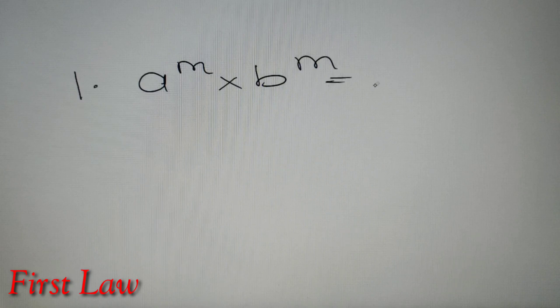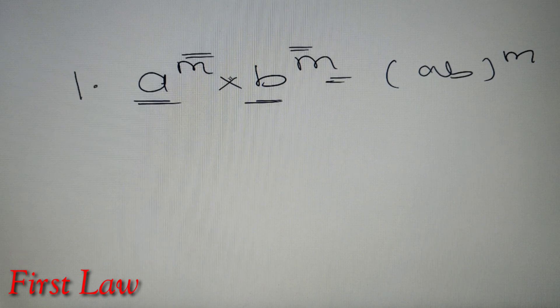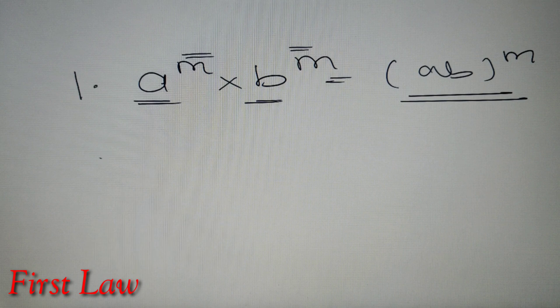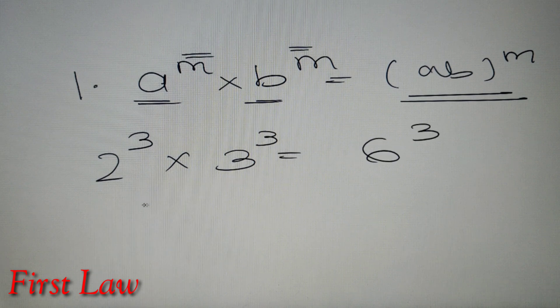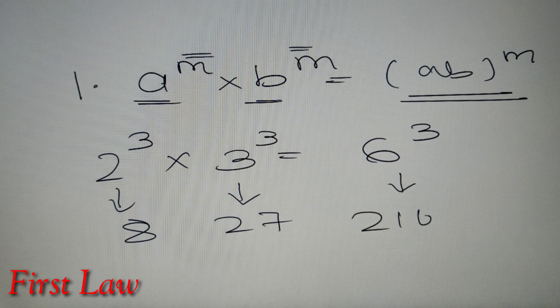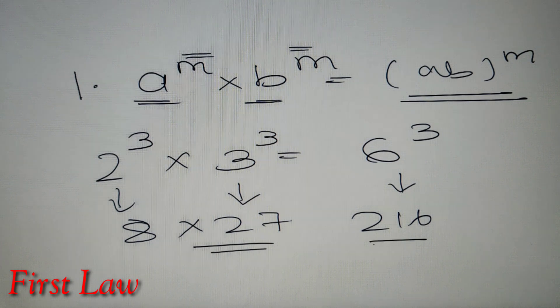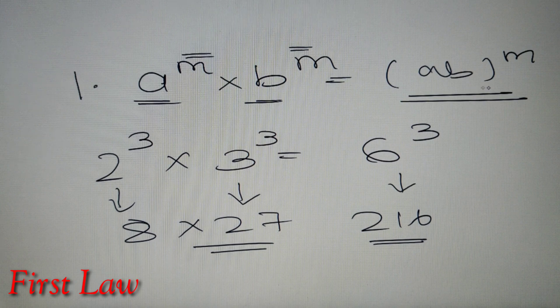Properties of indices are more commonly known as the laws of indices. According to the first law, if we have A to the power M multiplied by B to the power M, then this can be written as AB whole raised to power M. The bases are different but the powers are the same. For example, 2 to the power 3 multiplied by 3 to the power 3 gives 6 to the power 3. Verifying: 8 times 27 equals 216, and 6 cubed is also 216. So this law is verified.